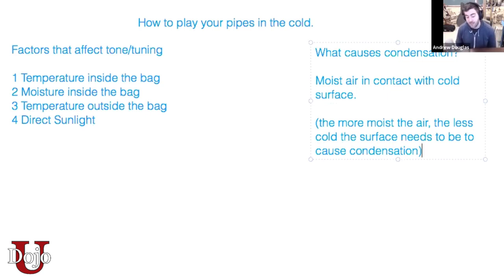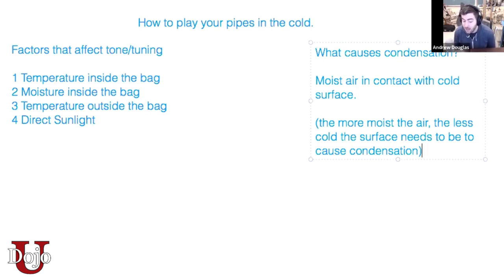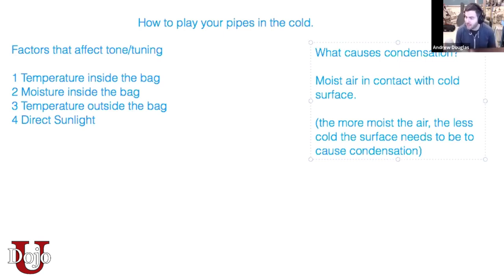For example, even though it's the middle of summertime and the air never drops below 70 degrees overnight, you could still have dew on the grass in the morning because the humidity of the air could be that high. So that's what causes condensation.